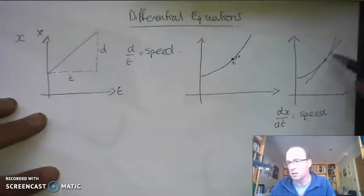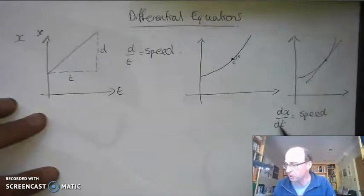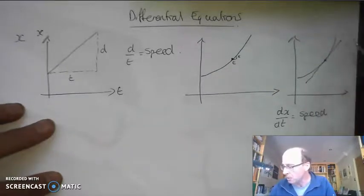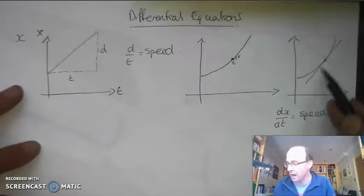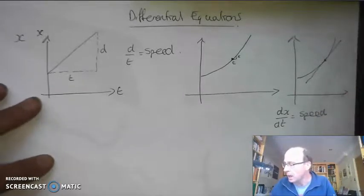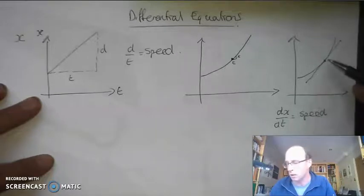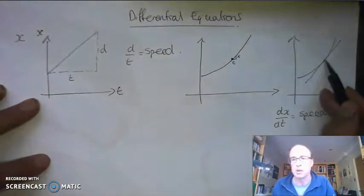dx by dt is going to be equal to my speed. What we say is that that's the differential of that curve — the small change in distance divided by the small change in time — and what it represents is the speed of the object at that point in time. It's equal to the gradient of the tangent touching that curve, so I can work out the gradient of that tangent and I've actually got the speed of the object at that point in time.